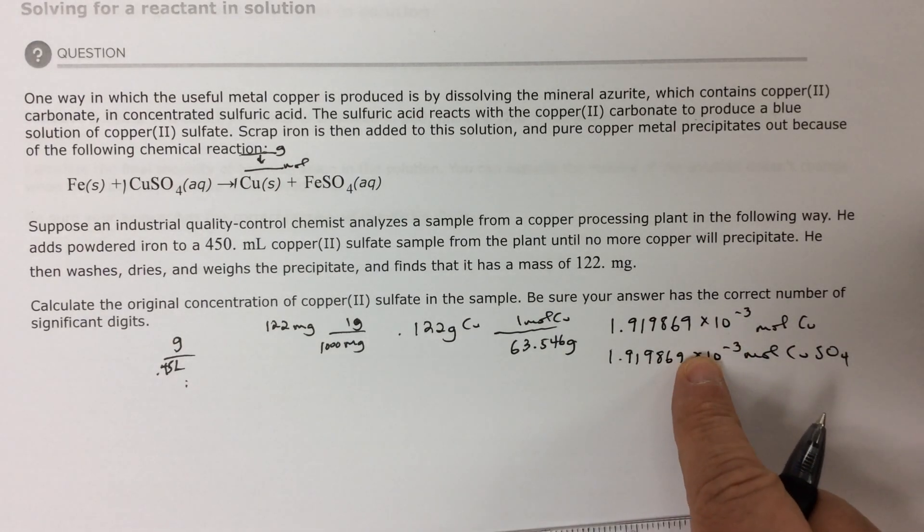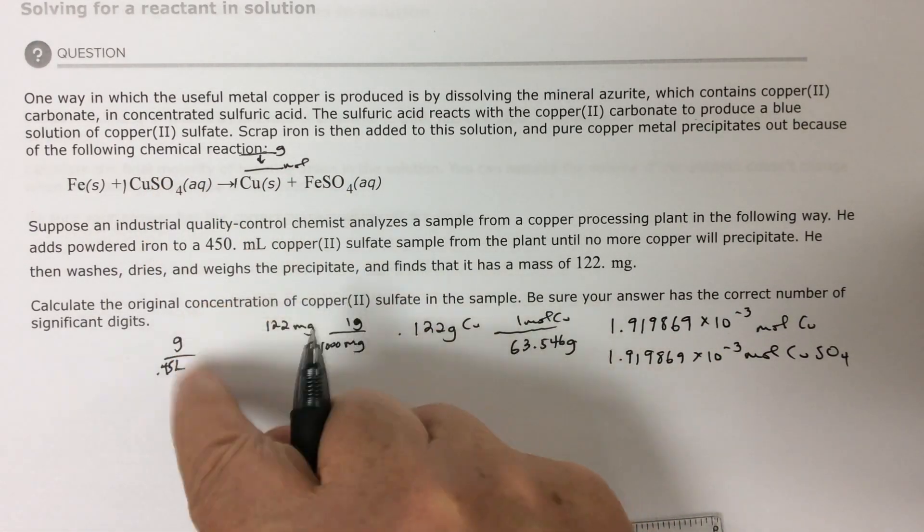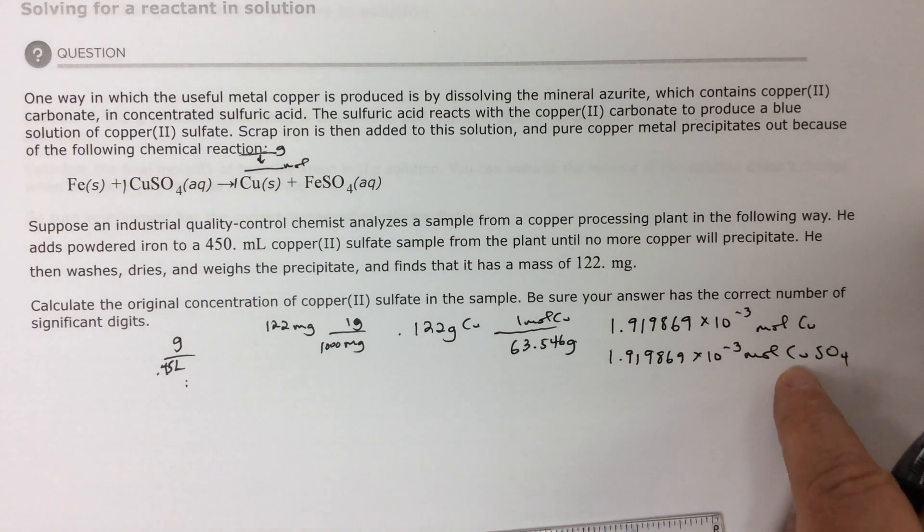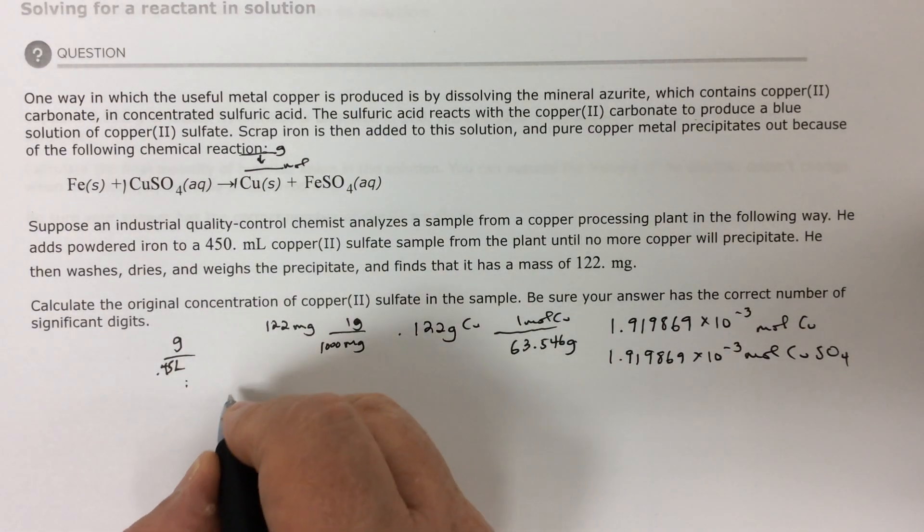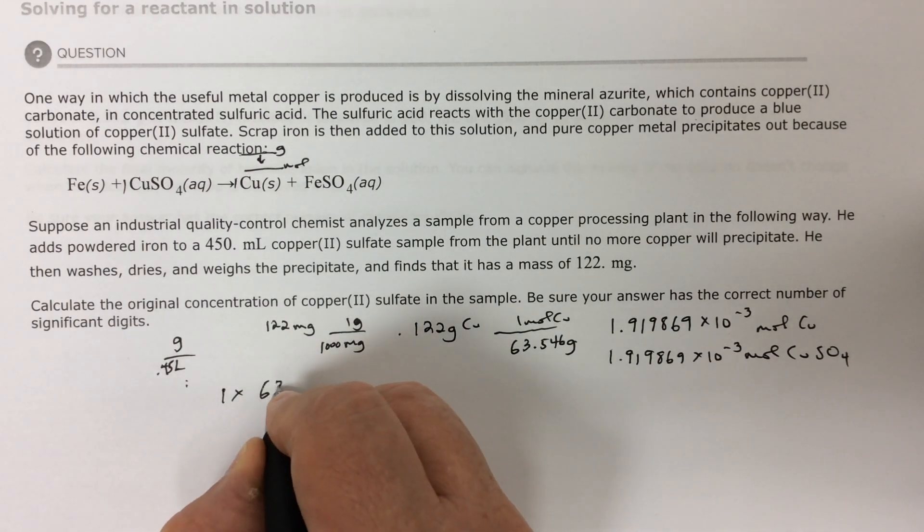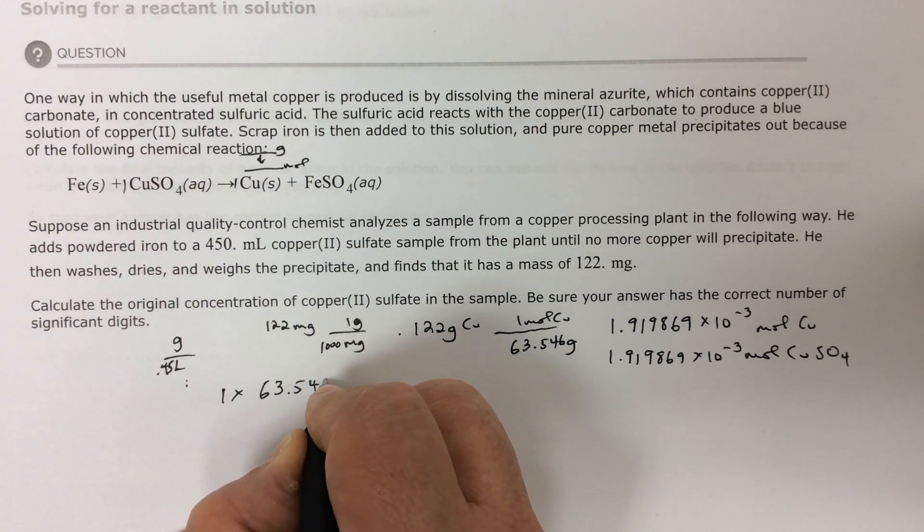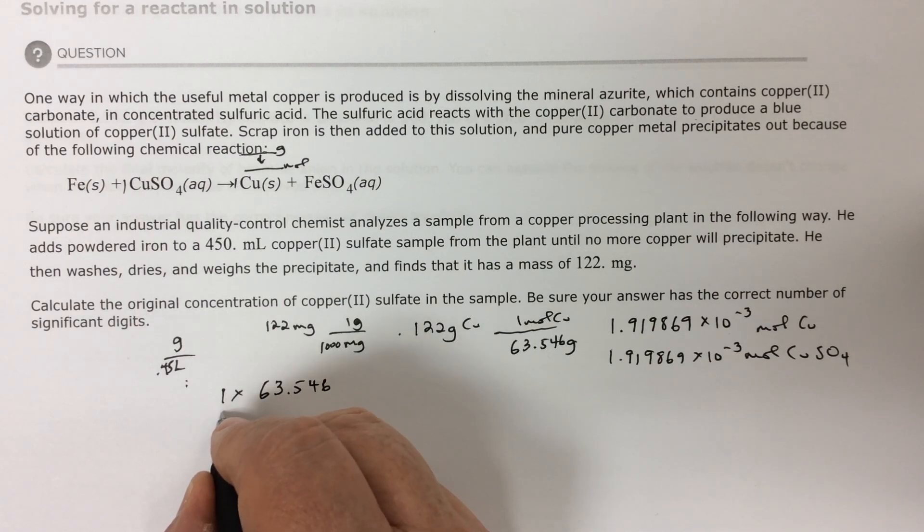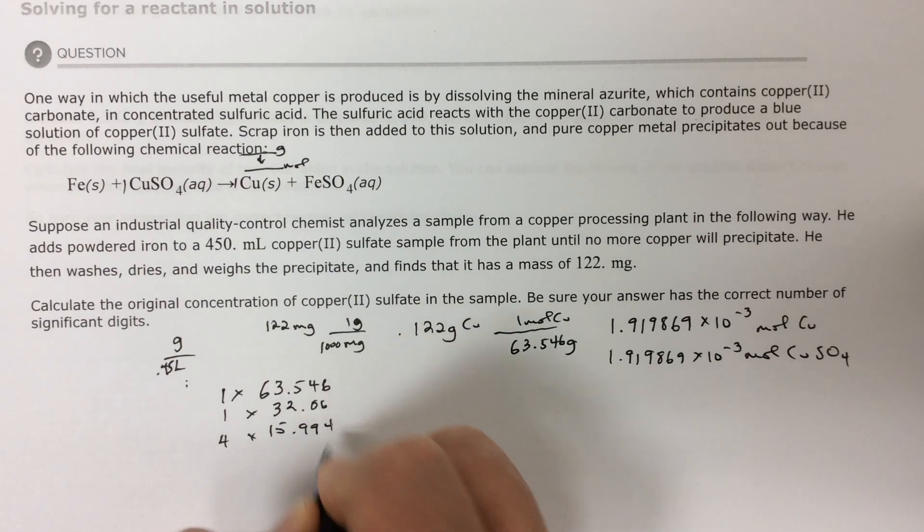Good, I'm almost there. Now I have moles. I just need grams, and it'll be grams per mole. So I need the atomic mass of this stuff. All right, the atomic mass of copper sulfate. So I've got one copper in it, so that's 1 times 63.546. I've got one sulfur in it, 1 times 32.06. And I have 4 oxygens times 15.994.